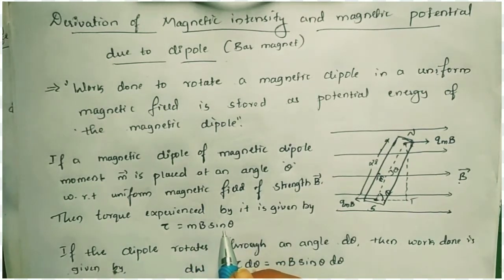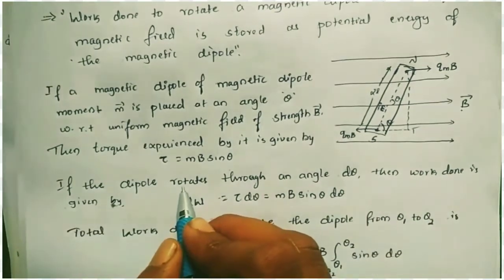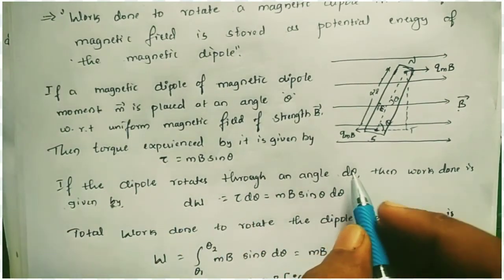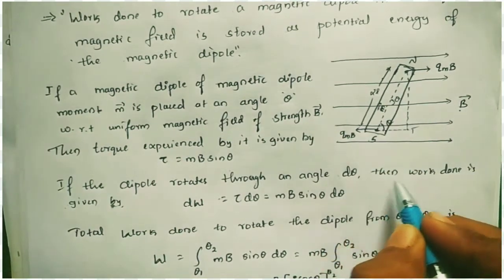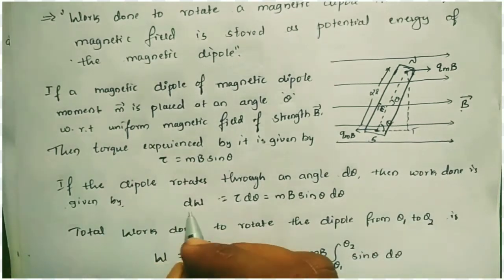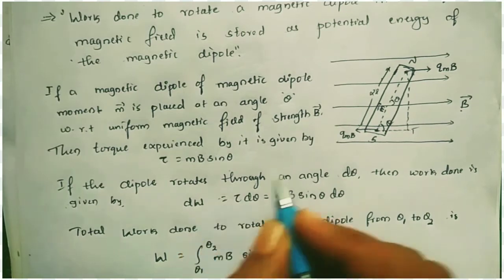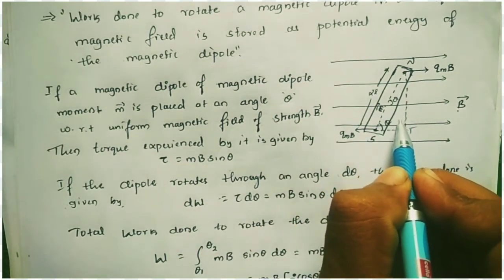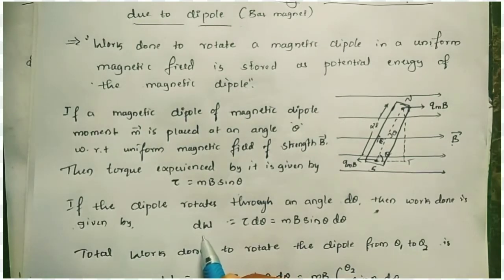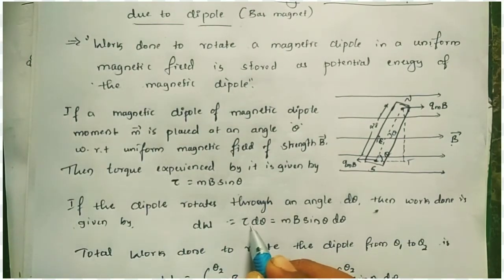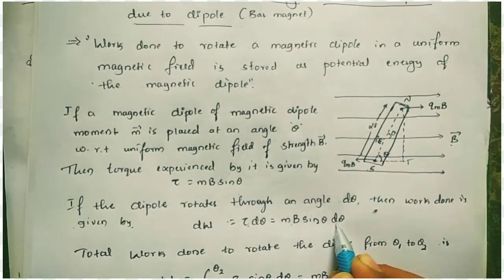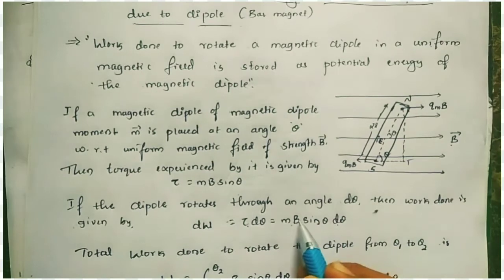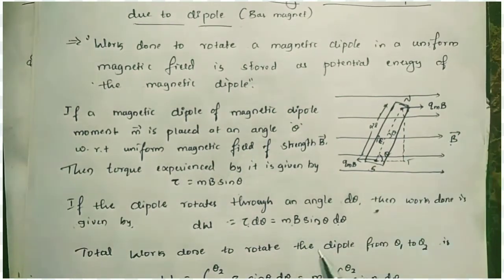The torque experienced by the dipole is given by torque = MB sinθ. If the dipole rotates through a small angle dθ, then the small work done is dW = torque × dθ = MB sinθ dθ. We substitute the torque value MB sinθ to get the small work done.